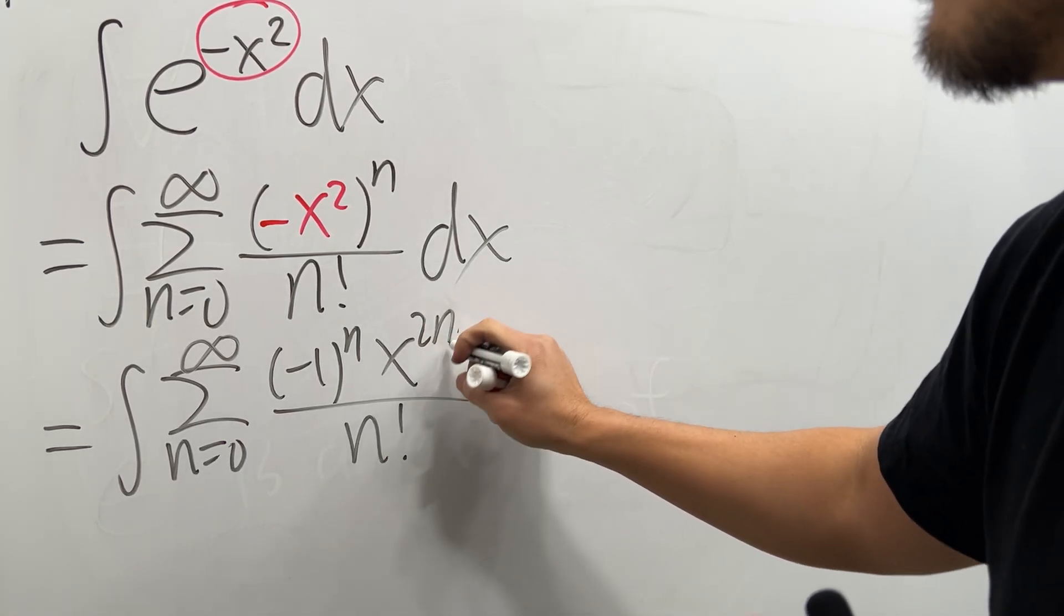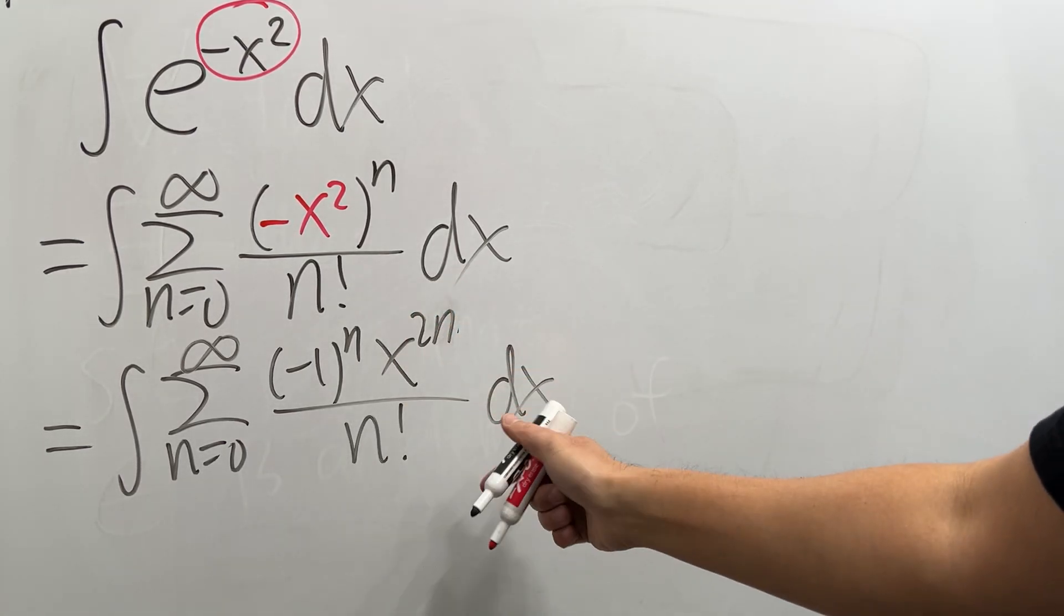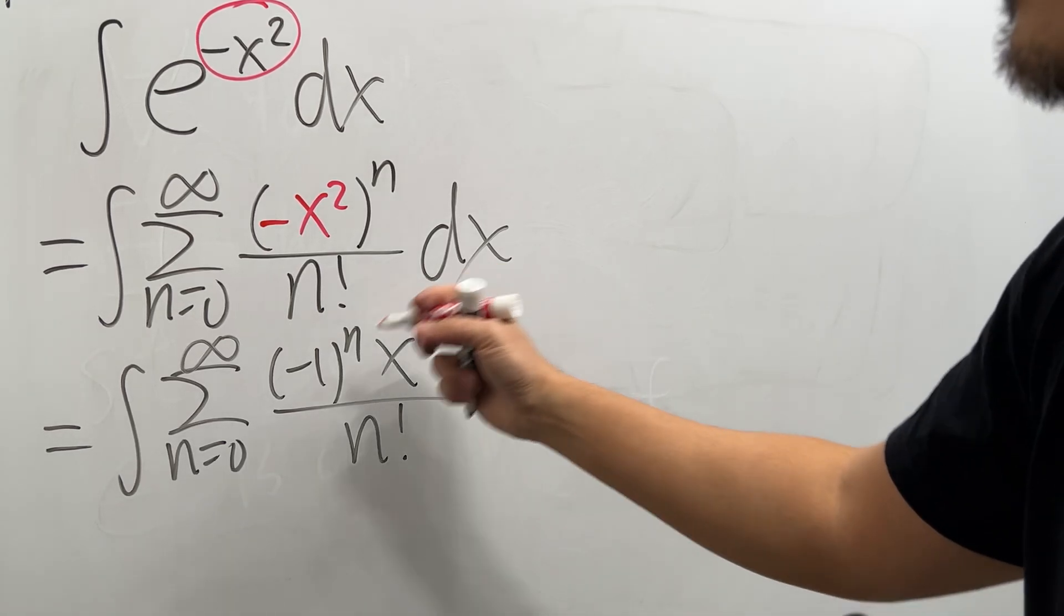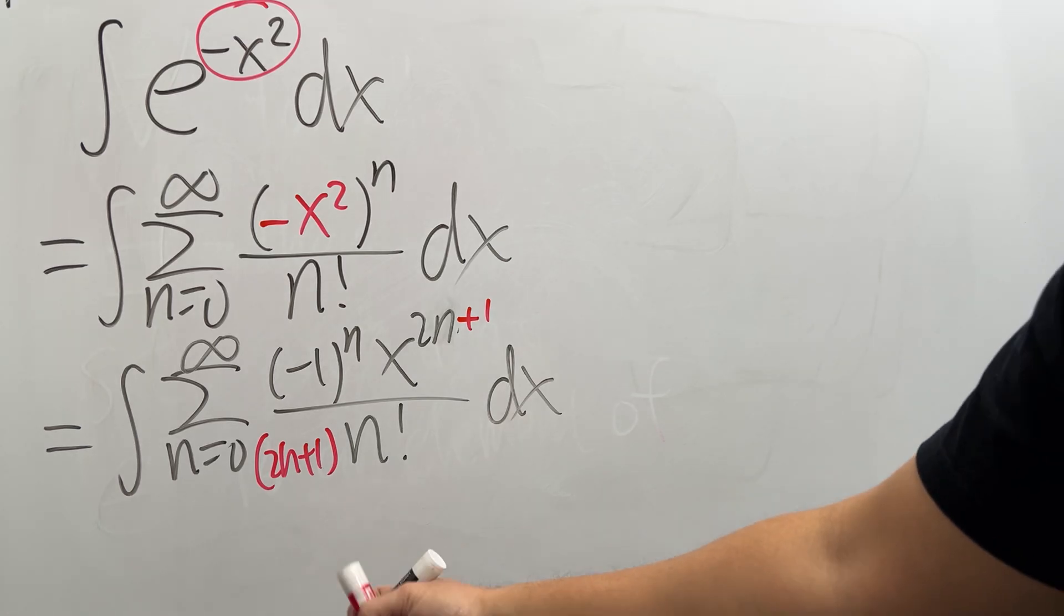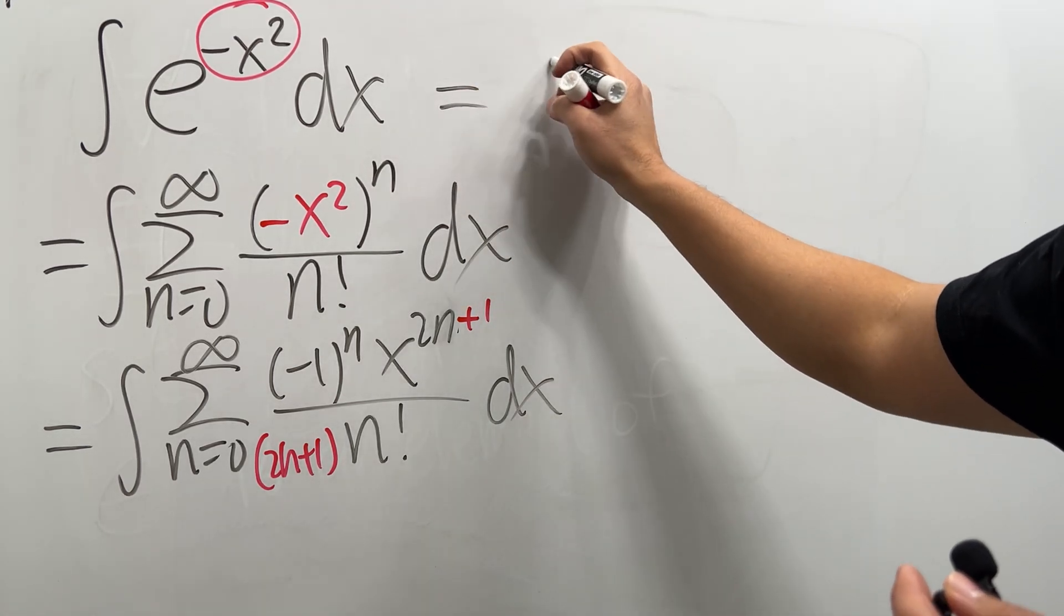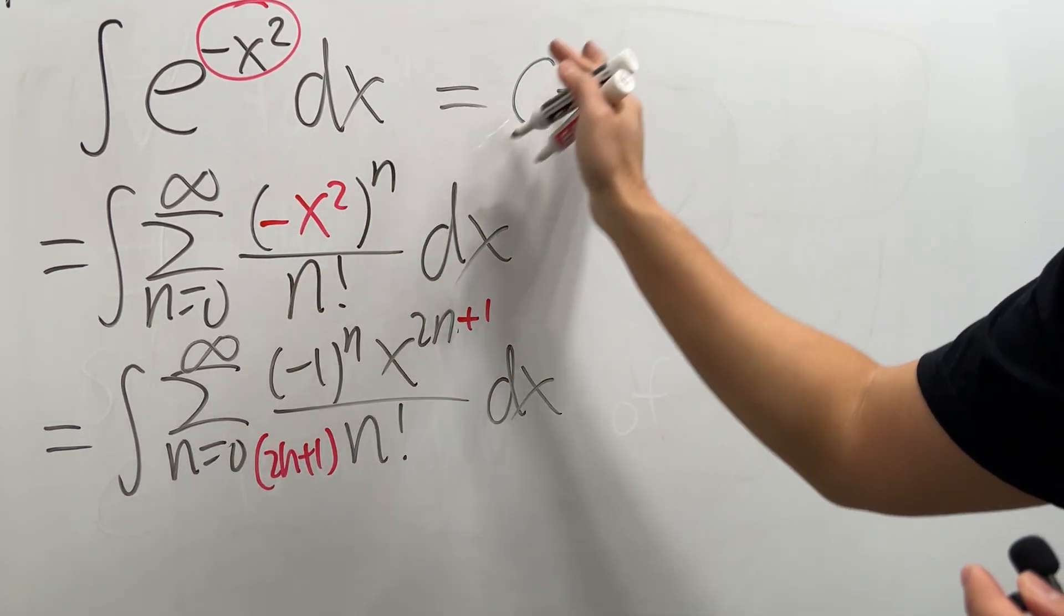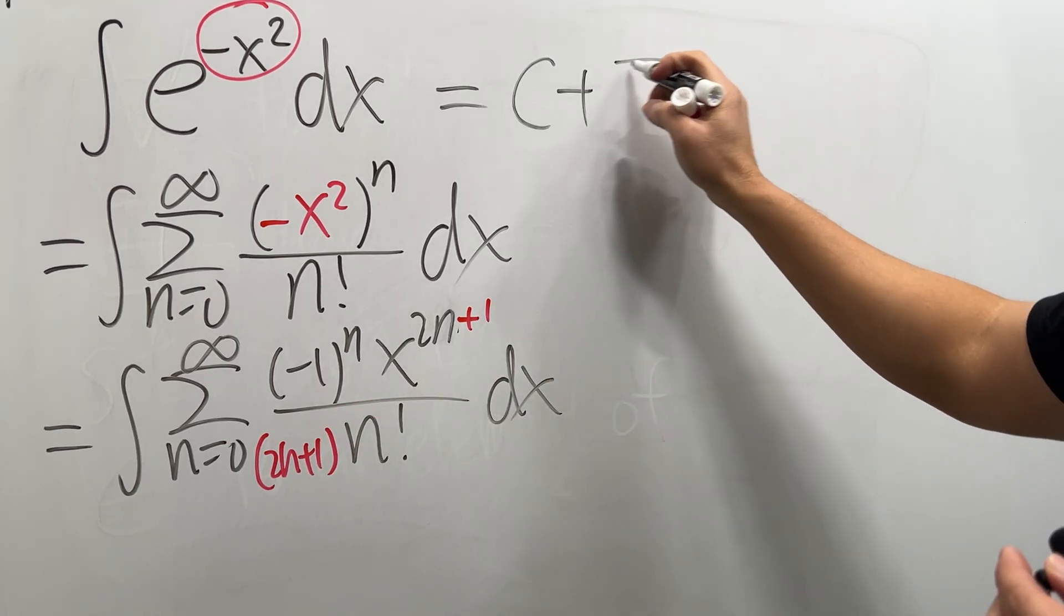Now let's just go ahead and do the integration with just the power rule backwards. Add one to the power and divide it by the new power, so it's 2n plus 1 here. And then for integration right here, I'm just going to say c plus.